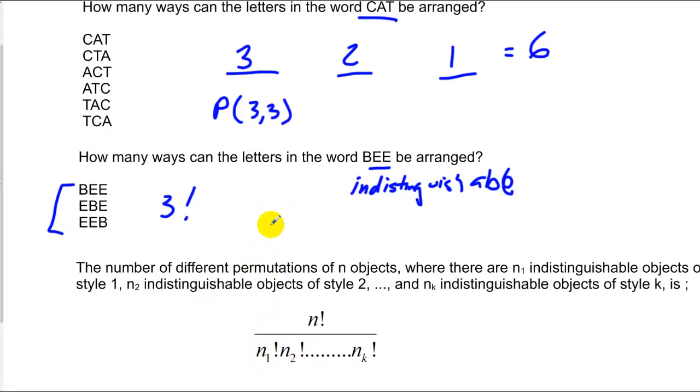So in this case, I had 3 factorial, and E repeated itself twice, so I'm going to divide that by 2 factorial. 3 factorial is 3 times 2 times 1. 2 factorial is 2 times 1. Reduce out, get a total of three different arrangements, which is what we had.